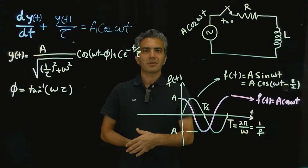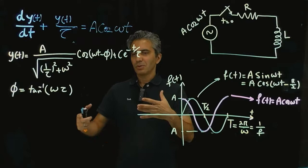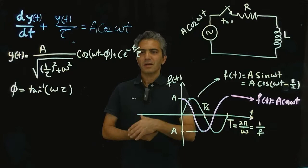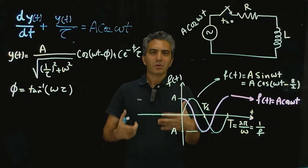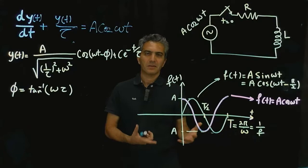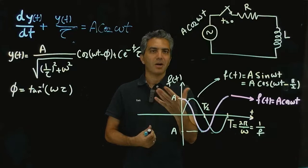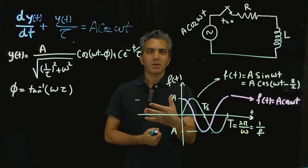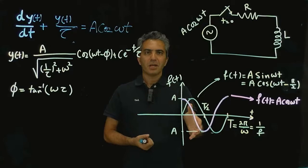Whether or not it would have been better to convert that alternating signal into a constant signal before transferring it is actually a good question, and there have been historical debates about that. Today we have both kinds of signals being transferred — both constant and alternating — depending on the application. But for the most part, electrical power generation and transfer depends on alternating voltages and currents, or in other words sinusoidal voltages and currents.